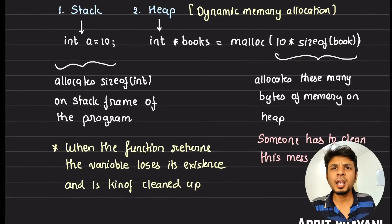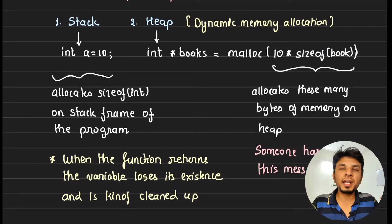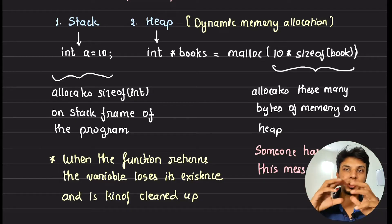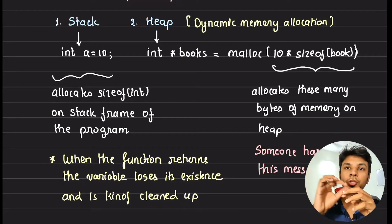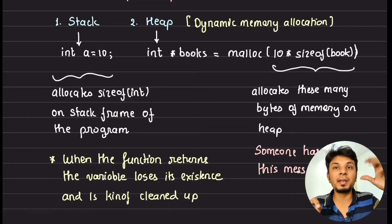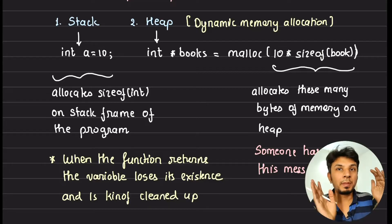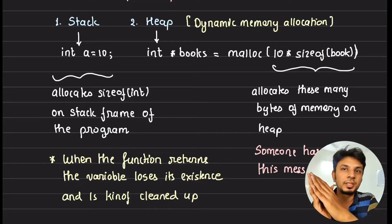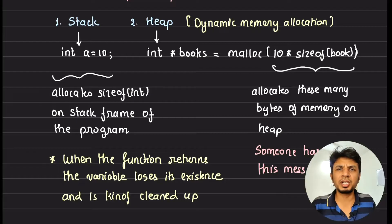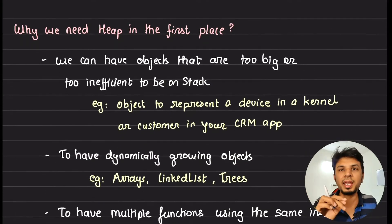We need heap because the stack is local — once a function is popped the data is gone. When you want to allocate big objects and pass them between functions with global allocation, you allocate the object onto the heap and pass the reference across functions. This avoids passing massive chunks of data by value, making cross-function communication efficient. Multiple functions can refer to the same variable location in heap.